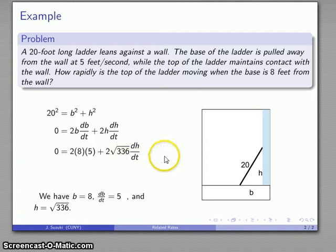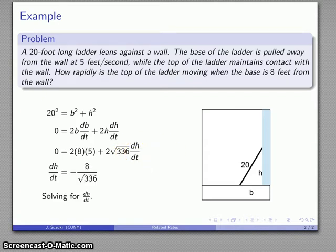And if I make those substitutions I end up with this expression which has just one thing I don't know, dh/dt. And I can solve for dh/dt is minus 8 over square root 336. Always look for what the units are. This is the rate of change of h with respect to time. This is a change in h. h is the height that's got to be something in feet with respect to time.